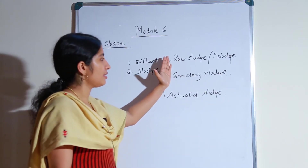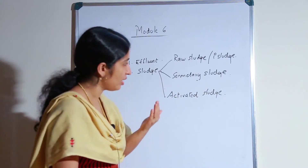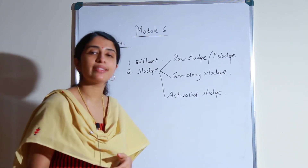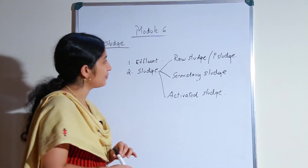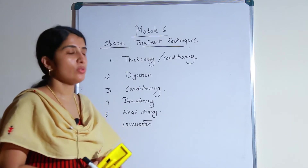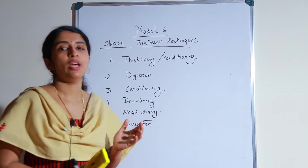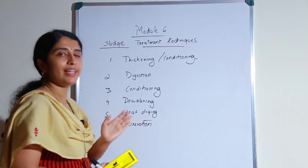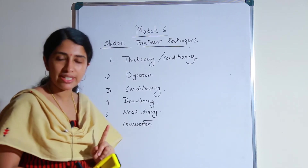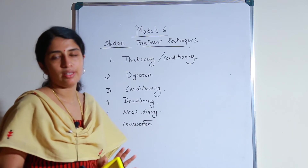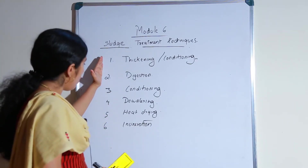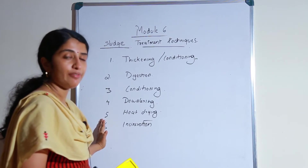We have to treat the sludge before disposal into land or sea. Now we are going to see what are the different sludge treatment techniques used in the treatment process. This is the flowchart of the sludge treatment process. The general aim of these treatment techniques is twofold: one is to reduce the moisture content, and the other is to decompose the organic matter. These are the two aims of these different treatment techniques.